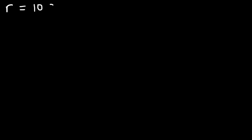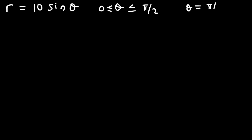Consider the polar equation r equals 10 sine theta. Our goal is to calculate the surface area where the angle theta is bounded from 0 to pi over 2, and the graph is rotated about the line theta equals pi over 2. So how can we find the surface area of the solid that's generated when we rotate the curve about that line?